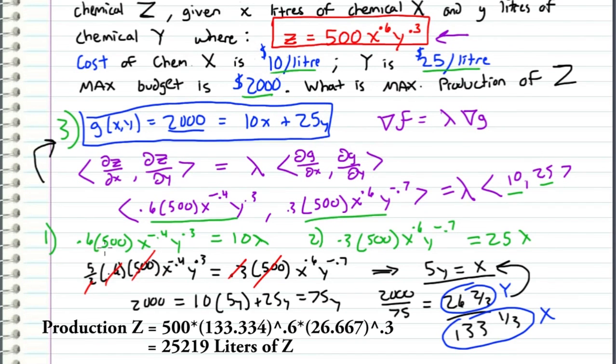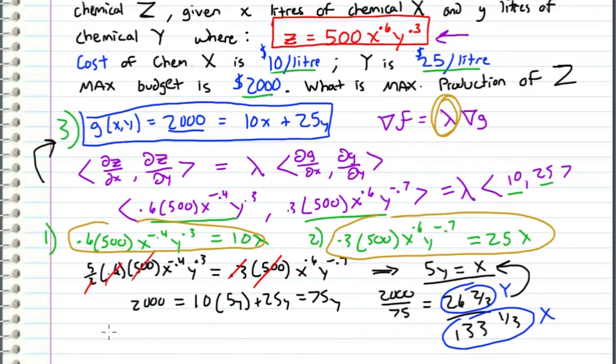Now the person who submitted this problem also wanted me to explain the significance of lambda, this guy right here. And we can easily evaluate lambda by just plugging it into this equation or this equation now that we know x and y. And when we solve for lambda we end up getting a value of lambda is equal to 11.35.